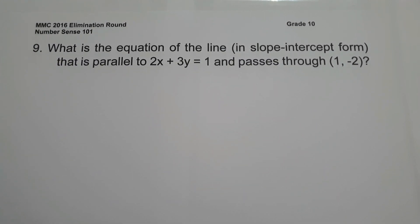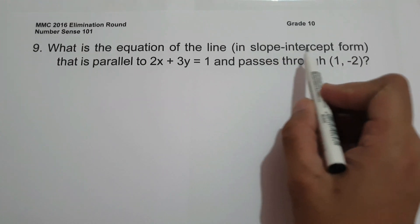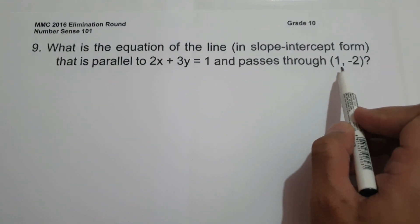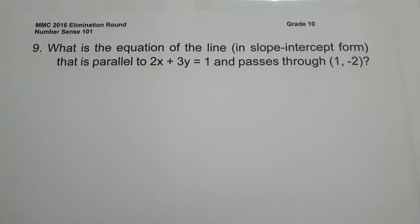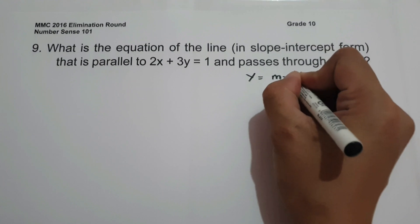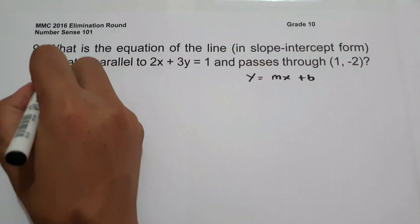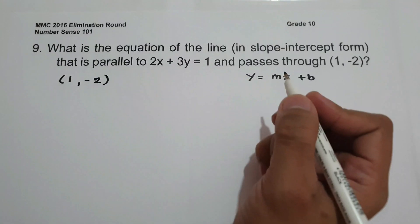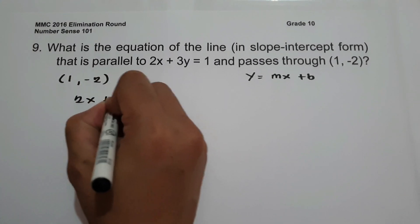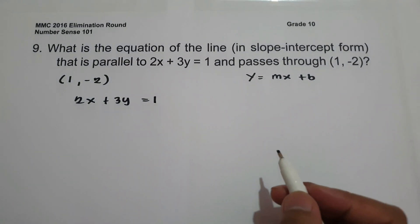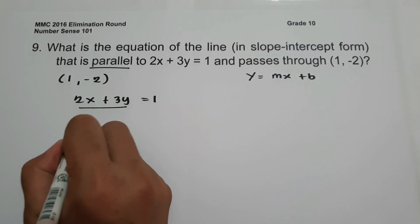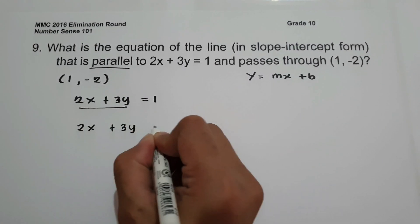For number 9: what is the equation of the line in slope-intercept form that is parallel to 2x plus 3y equals 1 and passes through (1, -2)? We write the answer in slope-intercept form y equals mx plus b. Since the given equation is parallel, we write the new equation as 2x plus 3y equals k.